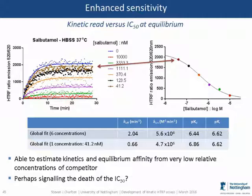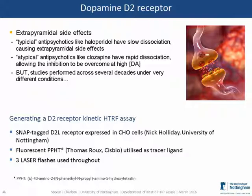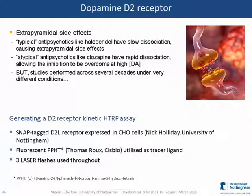That was our test case. We then applied this system to something we were really interested in — the D2 dopamine receptor field. I've explained that typical antipsychotics appear to have slower dissociation, while atypicals with fewer side effects have faster dissociation. However, the studies from which these conclusions were drawn range across several decades, several different labs using different technologies and different assay conditions. So it was very difficult to compare all those data. We wanted to use this high-throughput system to look at a large number of clinically used antipsychotics, measure their dissociation and association rates, and see if this hypothesis holds true.